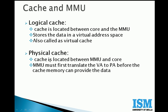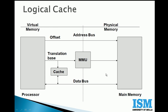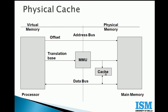Coming to physical cache: the cache is located between the MMU and the core. The MMU must translate the virtual address to physical address before the cache memory can provide the data. That's the distinction between logical cache and physical cache.